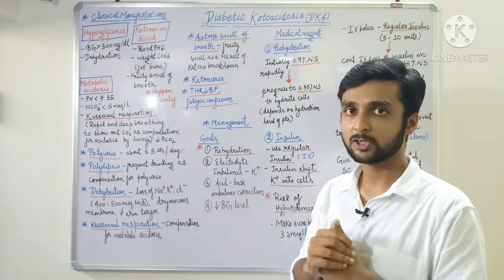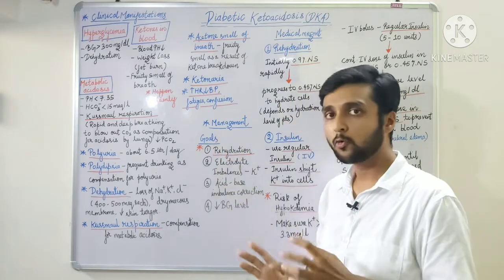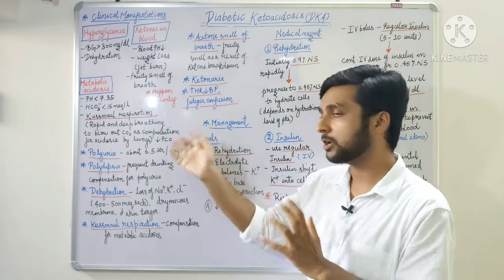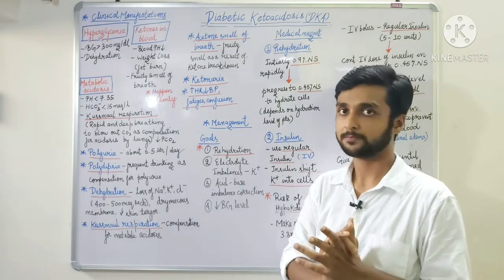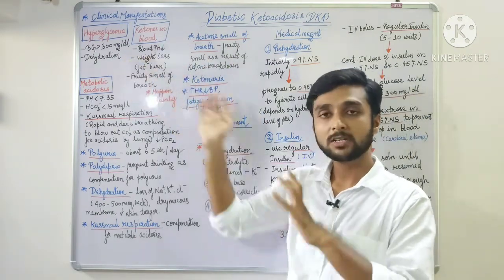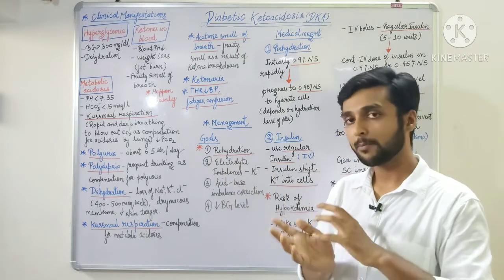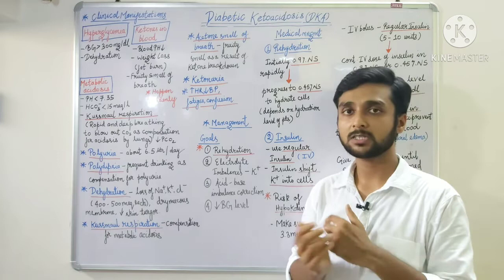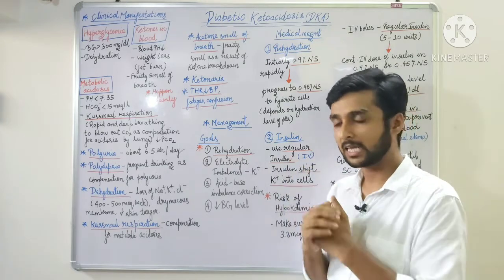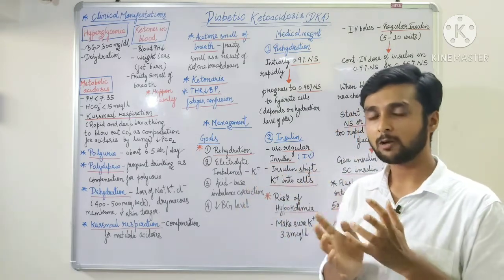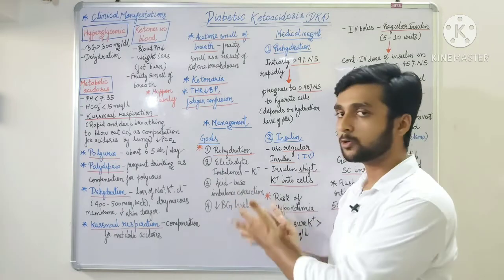Now let's talk about management of diabetic ketoacidosis. The four most important goals are: first, rehydration — because of polyuria and dehydration, the most important goal is to rehydrate the patient. Second, correct electrolyte imbalances, most importantly potassium, because imbalance can lead to cardiac abnormalities like dysrhythmias. Third, correct acid-base imbalance — metabolic acidosis and ketosis. Fourth, decrease blood glucose level to the proper range.